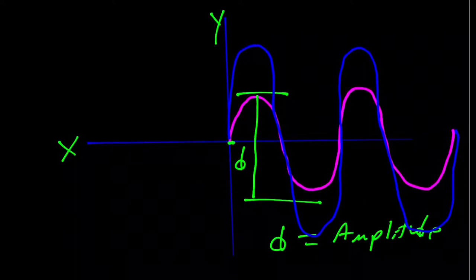This variation in amplitude is something we'll encounter later — it's called amplitude modulation, or AM radio. The modulation comes through by modifying the height, or amplitude, of the actual wave.